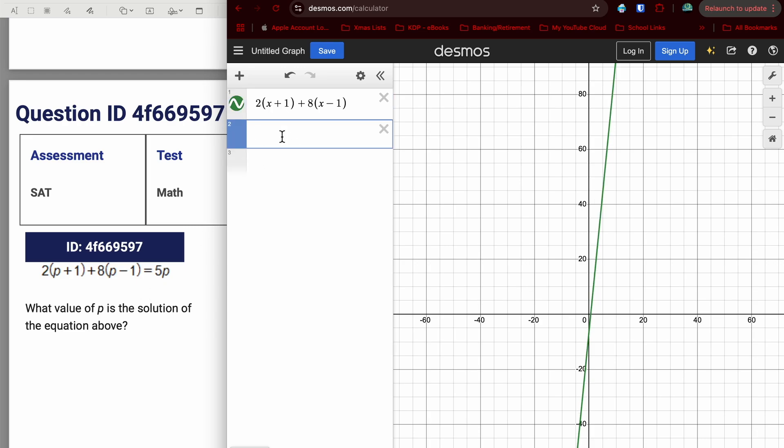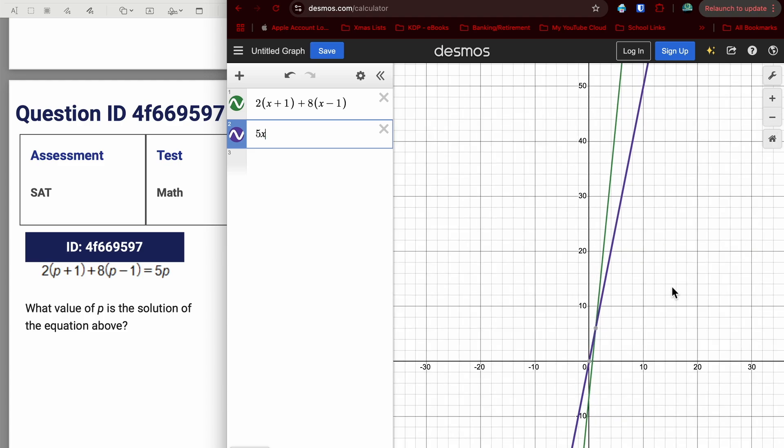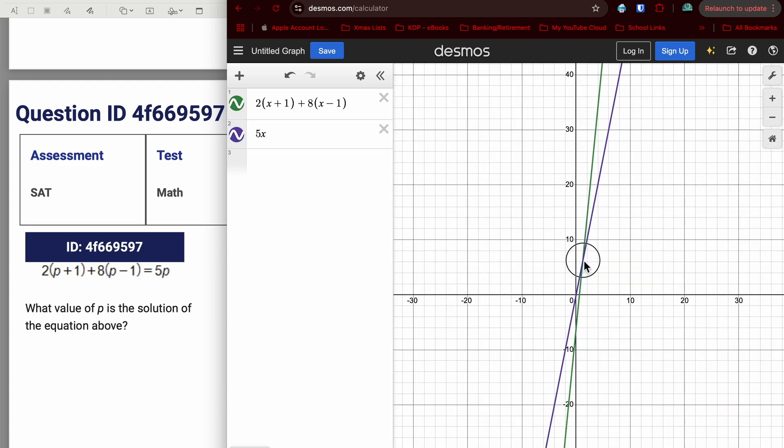So I'm going to go ahead and put that left hand side in remembering to use X. And then on the right hand side, I have the five P again, I'm going to replace that with five X. And then if you needed to zoom in, you really wouldn't have to though. But that point of intersection right there is going to be 1.2. So it's the solution.